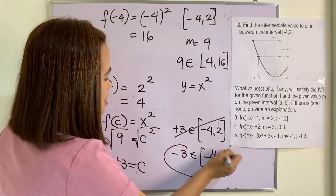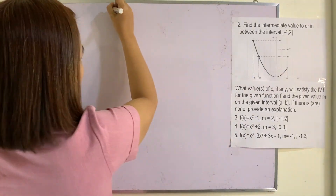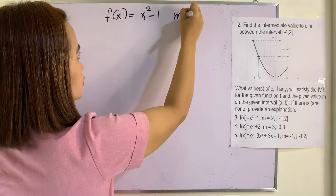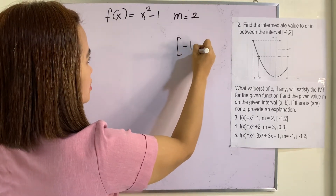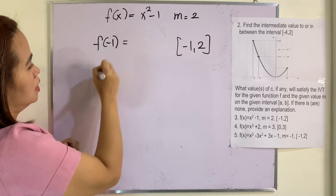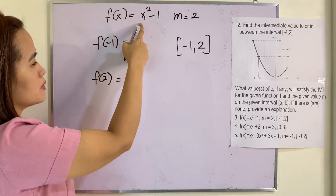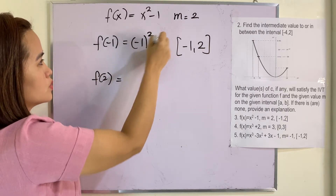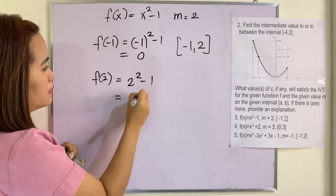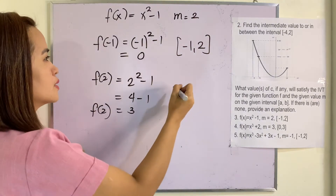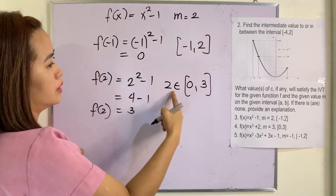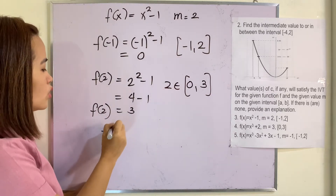Example 3. We have f(x) equals x squared minus 1. Our m is 2 and our interval is [-1, 2]. Let us verify whether 2 is an element of f(-1) and f(2). By replacing x by negative 1: (-1) squared minus 1, this is 0. And 2 squared minus 1 is 4 minus 1, which is 3. So we have the interval [0, 3], and m = 2 is an element of [0, 3].